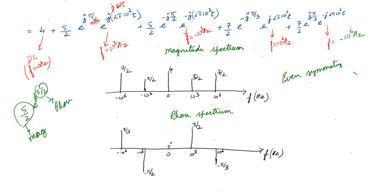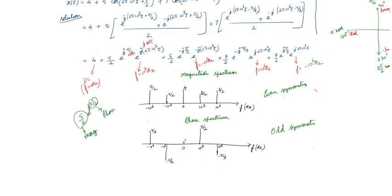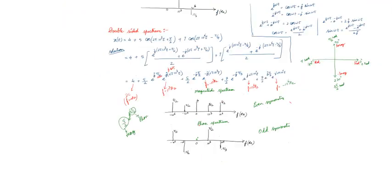That is why we say the magnitude spectrum is always even symmetry. Then what about the phase spectrum? The phase spectrum is odd symmetry. At 10³ Hz it is +π/2; at −10³ Hz it is −π/2 — they are opposites. At 10⁶ Hz it is −π/4; at −10⁶ Hz it is +π/4. So the phase spectrum has odd symmetry.